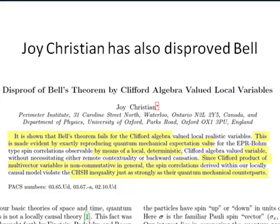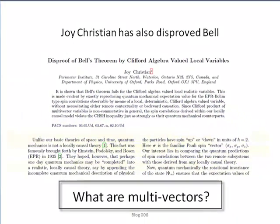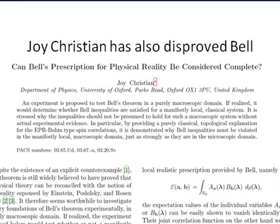Since the Clifford product of multi-vector variables is non-commutative in general, the spin correlations violate the CHSH form of Bell's inequalities just as strongly as their quantum mechanical counterpart. We'll come back to multi-vectors later.